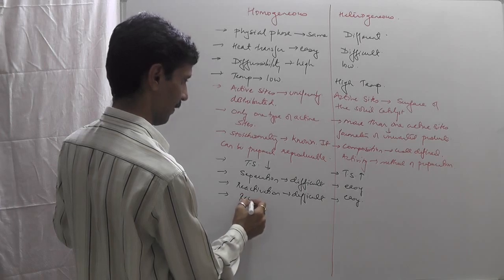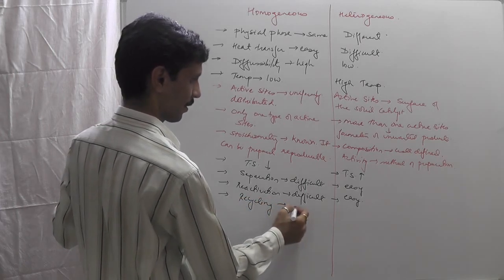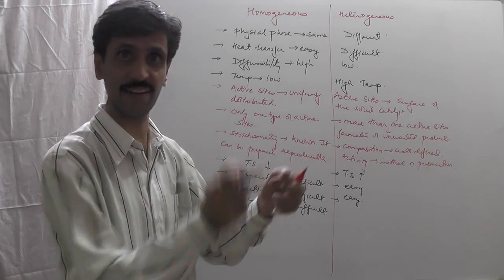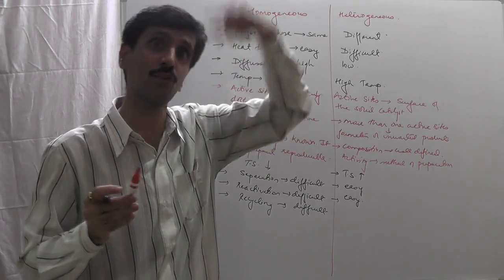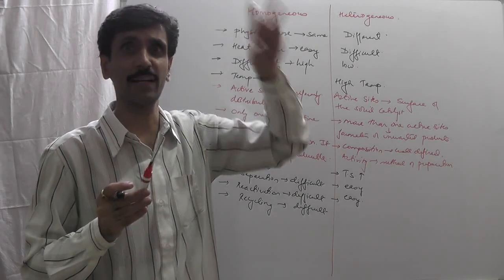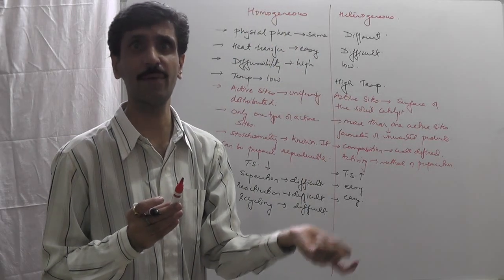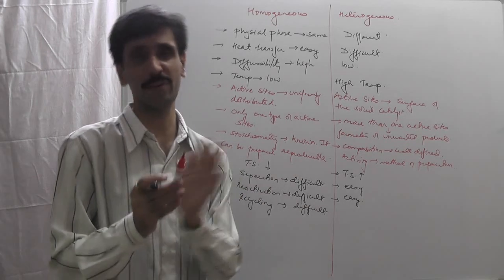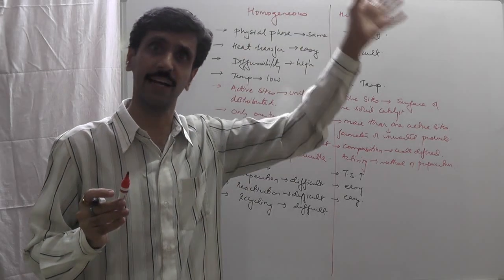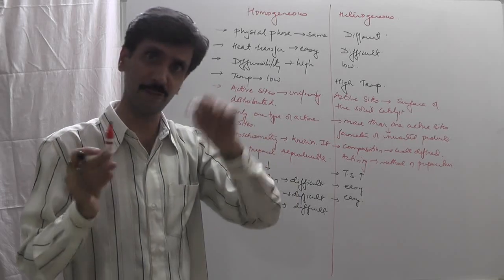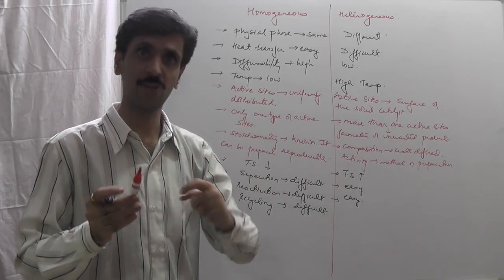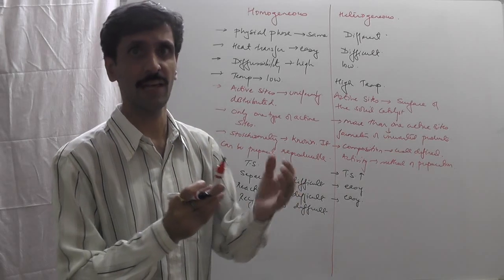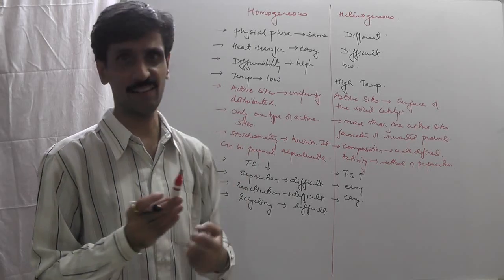The eleventh point is recycling — getting the catalyst back for reuse. In homogeneous catalysis, recycling is difficult because separation is difficult. Since the physical states of the reactant and catalyst are the same, a small amount of reactant may remain mixed with the catalyst, making it hard to recover the pure catalyst. In heterogeneous catalysis, the recycling process is quite easy by comparison.